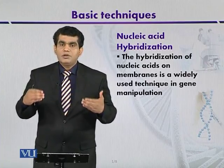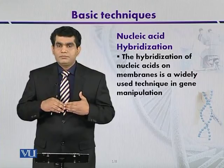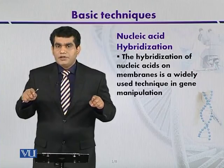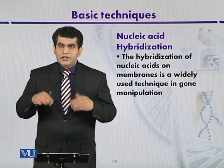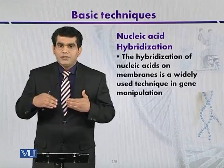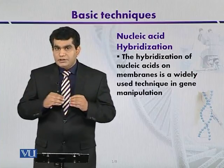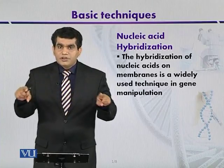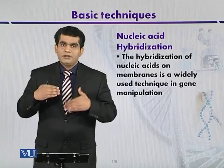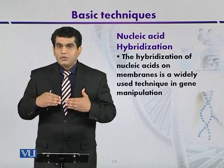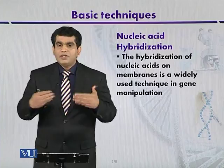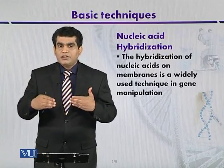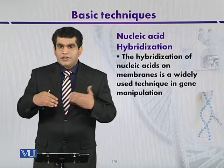A nucleic acid probe is a single strand of DNA or RNA that is used to detect the complementary sequence in the target DNA. The sequence of the gene of interest is known, and the probe also carries the complementary sequence. This probe is labeled with radioactive substances like Phosphorus-32 so that it can later be detected by autoradiography.